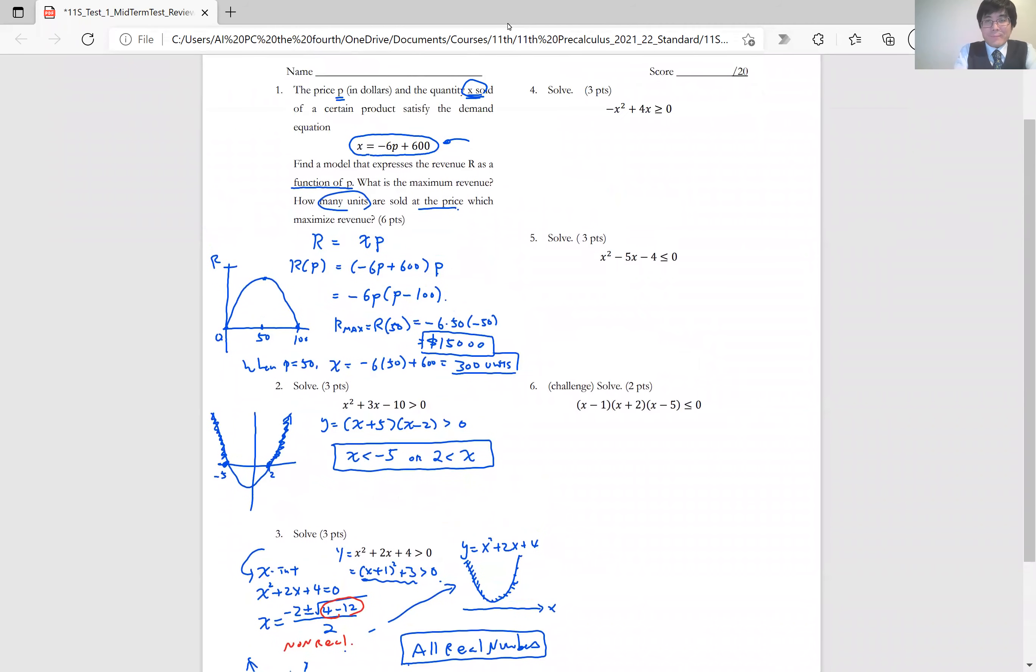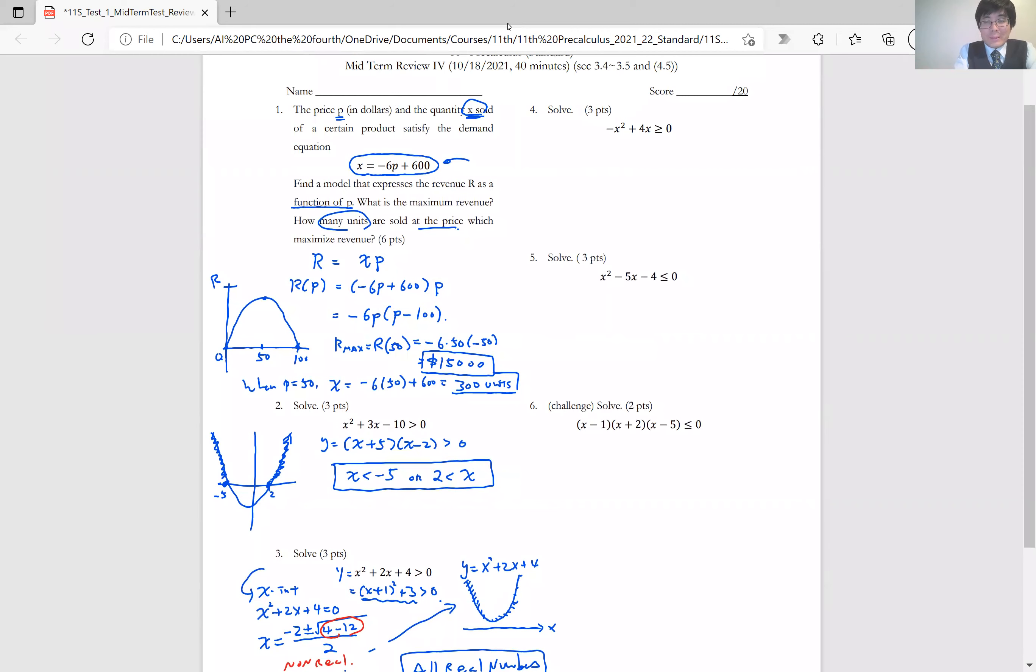Number 4. Number 4 is like you have a negative x squared plus 4x is greater than or equal to 0. You can factor this one quickly. So it's going to be negative x times x minus 4. It's greater than 0. And this is like upside down parabola with x-intercept is 0 and 4. And we are trying to find for what value of x it's greater than or equal to 0. So the answer is any number between 0 and 4.